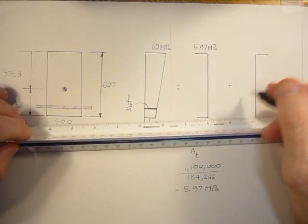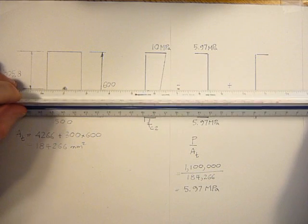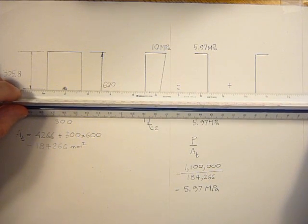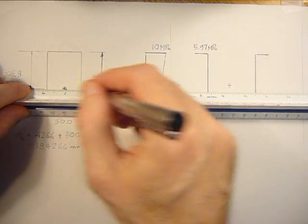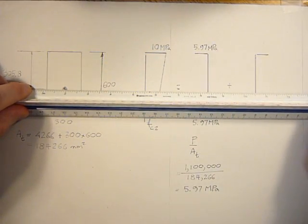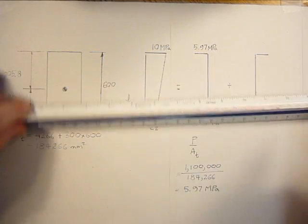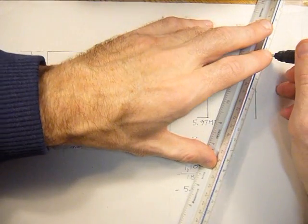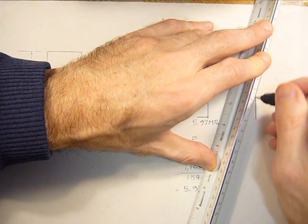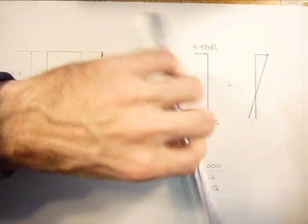Just draw it in like this. And the neutral axis of this stress gradient for pure flexure will coincide right with this geometric centroid. So that's right about here somewhere. And then we can just draw the stress across the section.